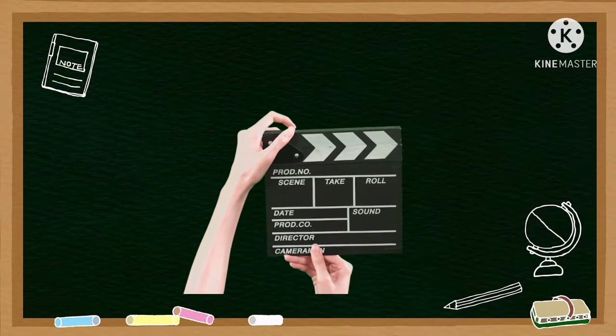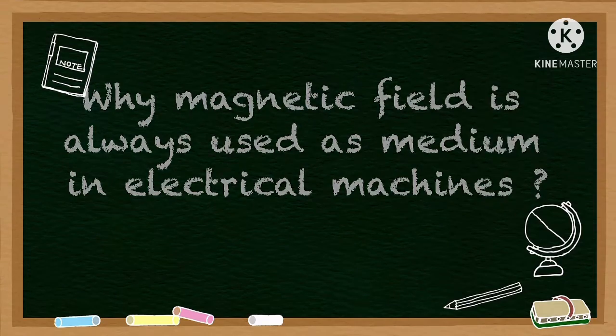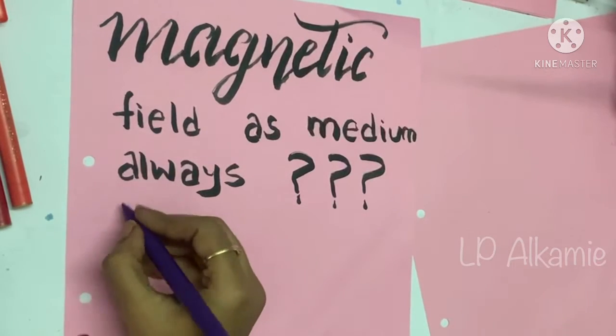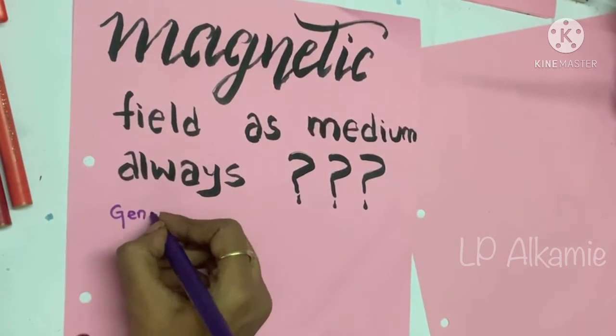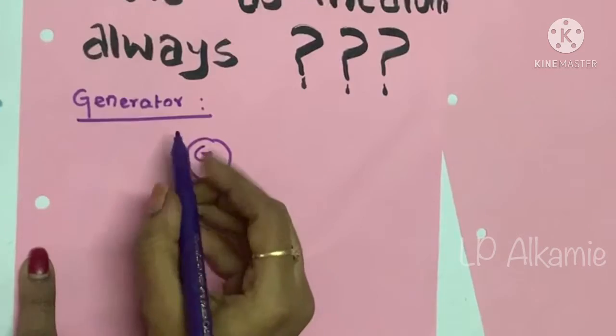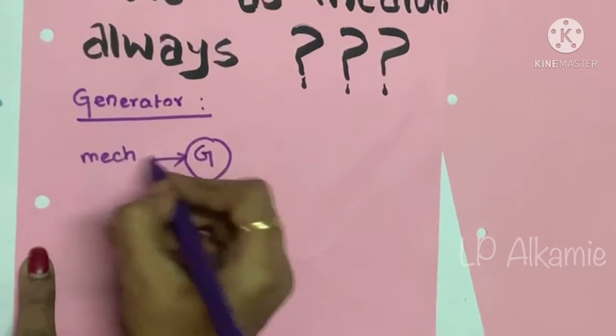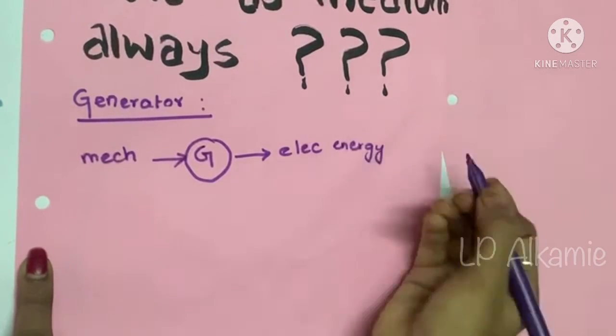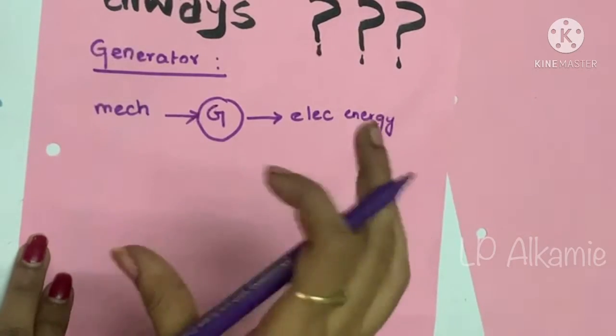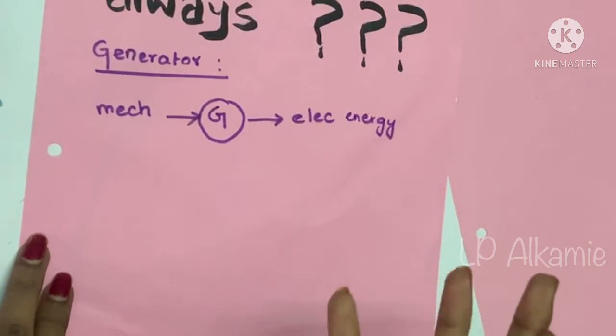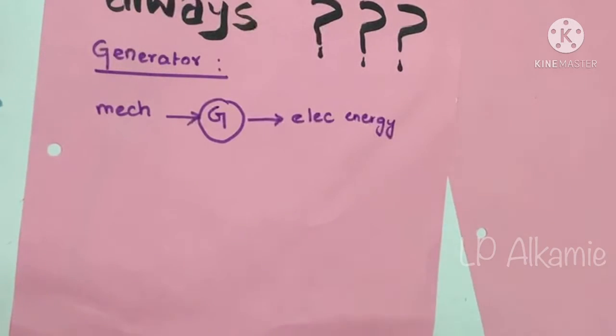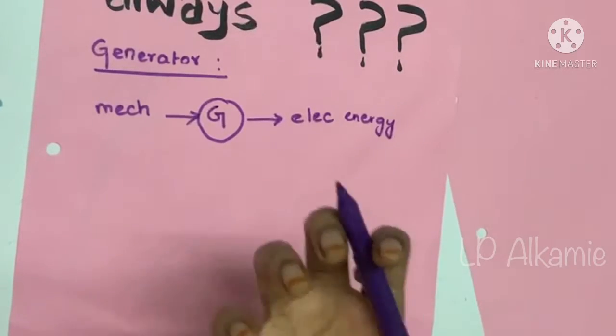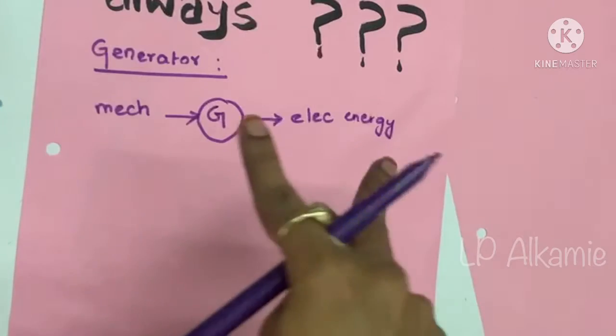If you consider a generator, I give mechanical energy and I'll get electrical energy, right? That is input. I'm driving the generator at some speed with some torque, and I'll be getting an electrical energy at some voltage and a frequency. But what is happening inside is there is a medium which is used for conversion of this mechanical to electrical.